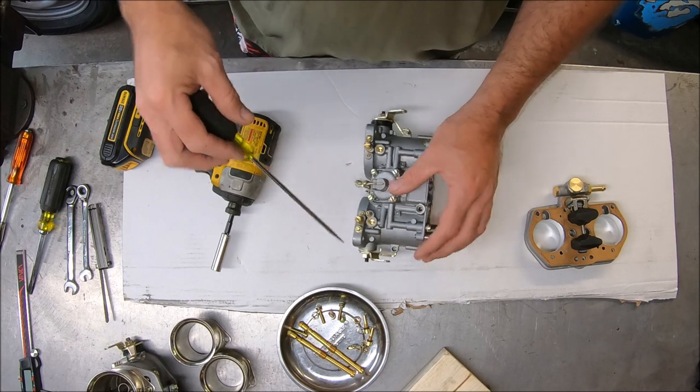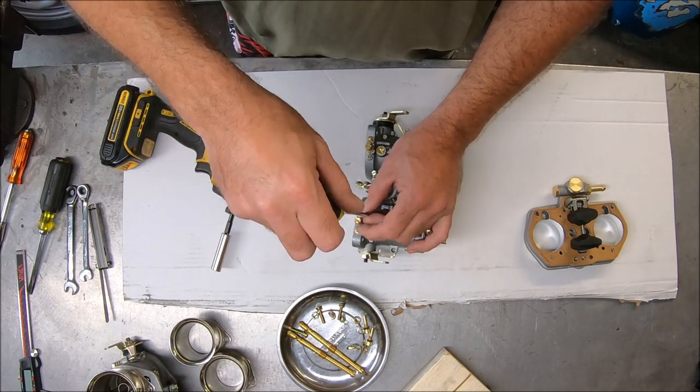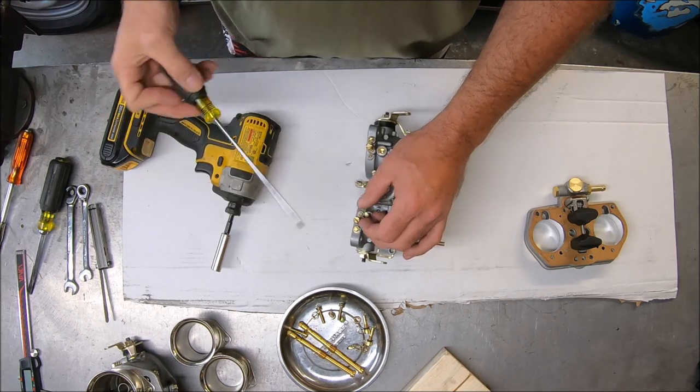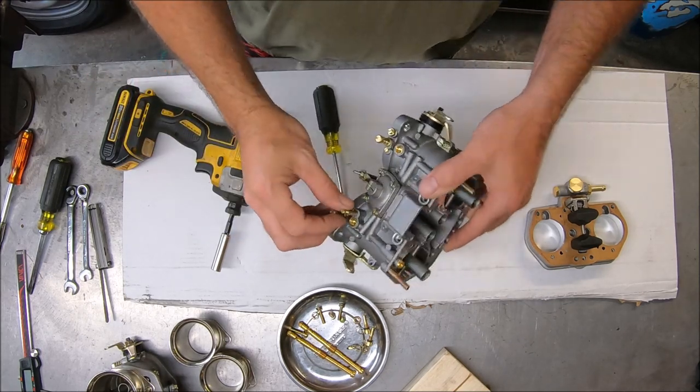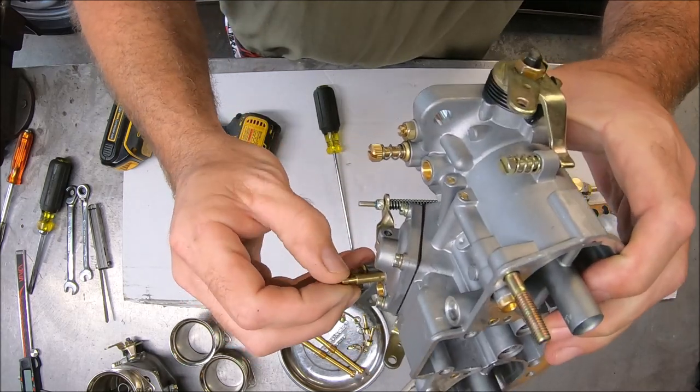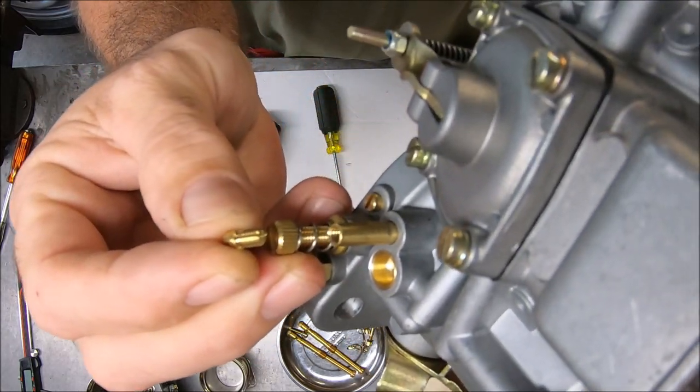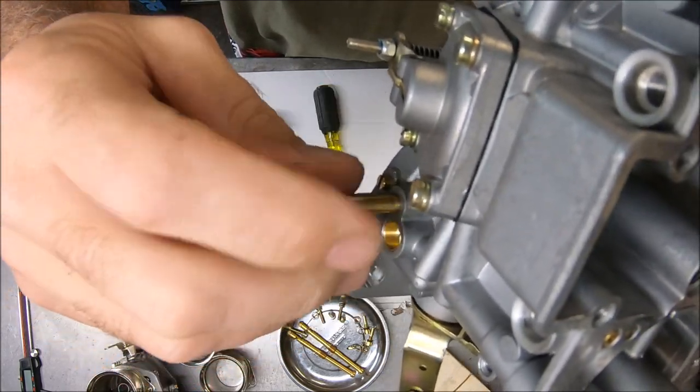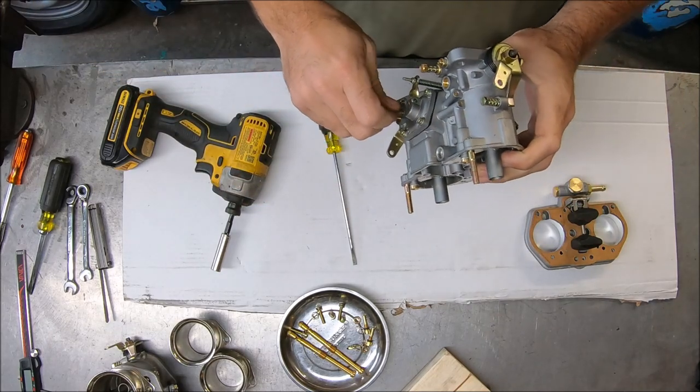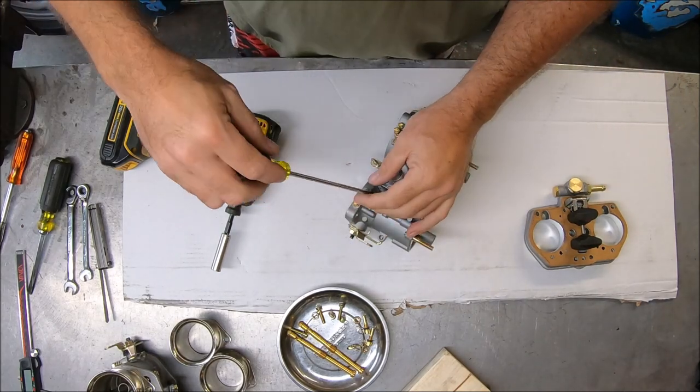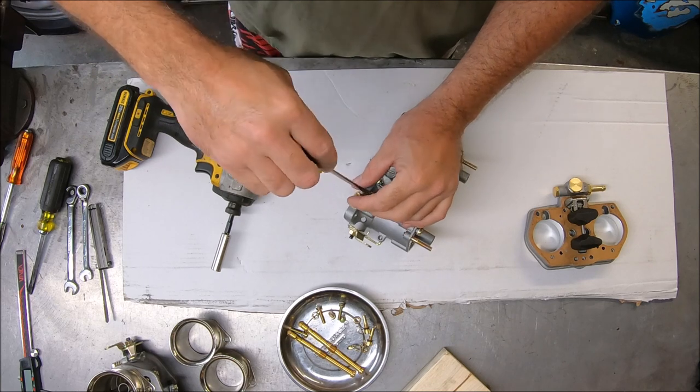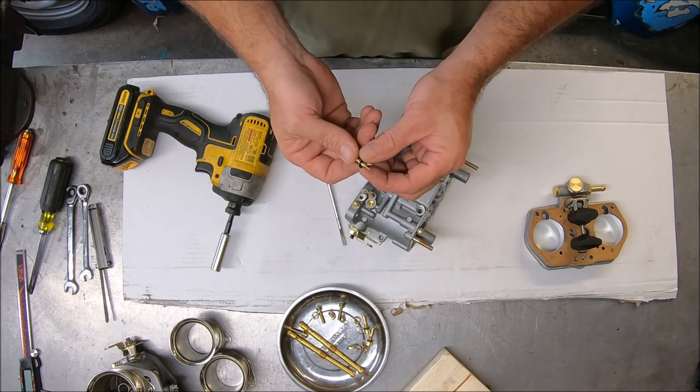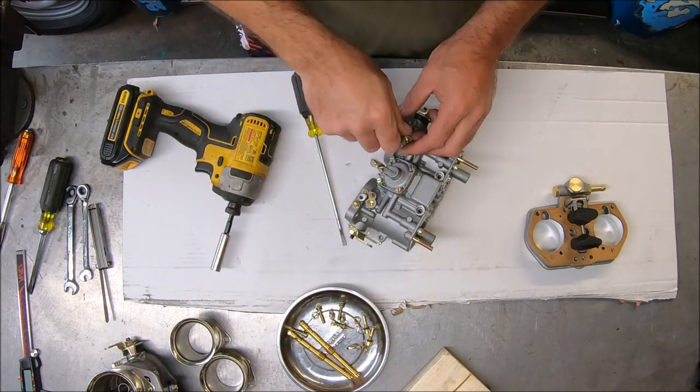Now the nice thing is, these do have the provision for a vacuum advance, just like your Redline or Empy's do. You simply just take that little screw out right there, and that's for a vacuum advance if you need it. So again, essentially these are Empy. I mean, why wouldn't they be made in the same exact factory as everything else? You've got your O-rings in place. Everything's in place.